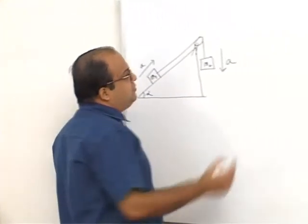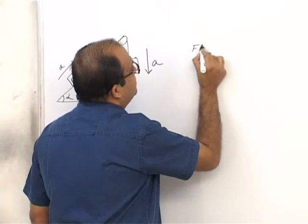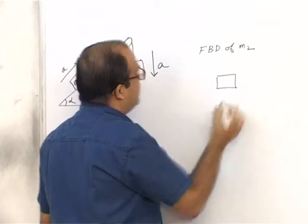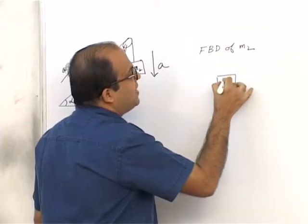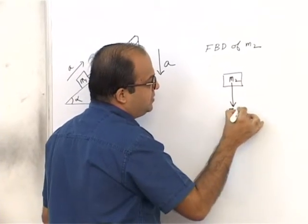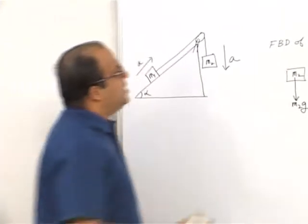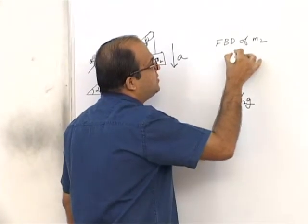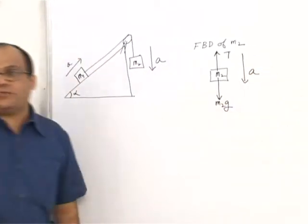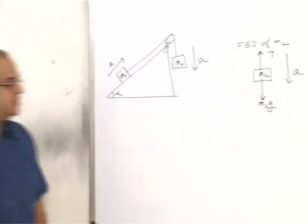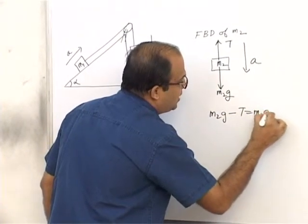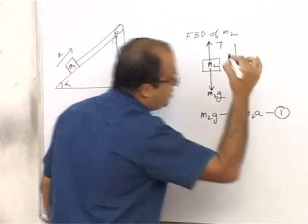First, let us draw the free body diagram of M2. Since M2 has mass, weight acts vertically downward. Since it is connected by a string, tension acts upward along the string, and acceleration is downward. The net force must be downward, so M2G minus T equals M2A — equation 1.